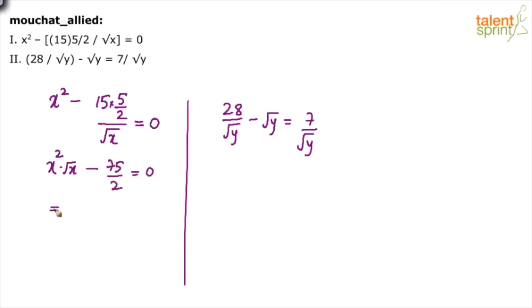How will you solve this? See, root x is x power 1 by 2, so x power 2 into x power 1 by 2 will be x power 5 by 2, right, minus... oh, now I understand, I think it is supposed to be power, you have not given that, because otherwise this question makes no sense. x power 5 by 2 equals to 75 by 2.